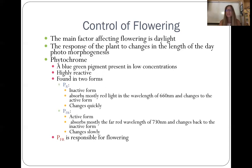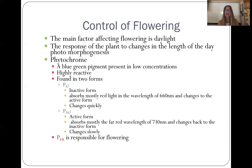The response of the plant to changes in length of day is called photomorphogenesis — photos meaning light, morpho meaning change in the plant, and genesis meaning growth. So we're talking about the change that triggers flowers to grow. Phytochrome is a pigment in the plants present in low concentrations; it's highly reactive and comes in two forms: PR and PFR. PR is the inactive form — it absorbs red light and changes to the active form quickly. PFR is the active form — it absorbs far-red light and changes back to the inactive form slowly. The presence of PFR causes flowering.